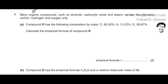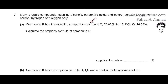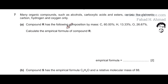The question states that many organic compounds such as alcohols, carboxylic acids and esters contain the elements carbon, hydrogen and oxygen only. There is a compound R with the following composition by mass: carbon 60%, hydrogen 13.33%, oxygen 26.67%. We are supposed to calculate the empirical formula of compound R.